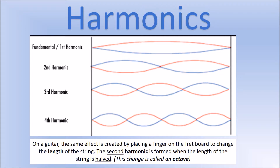With the fundamental we have two nodes at each end. If we double the frequency at which we vibrate the string we get the second harmonic. Three times the fundamental frequency gives the third harmonic, and four times gives the fourth harmonic. We can also achieve the same effect by making the string half as long.